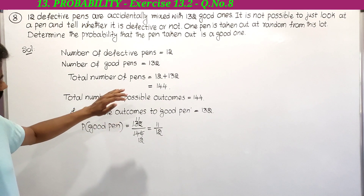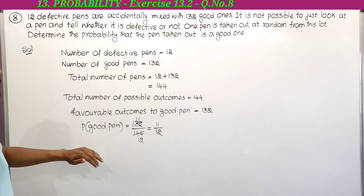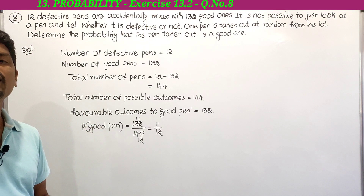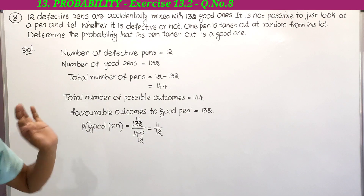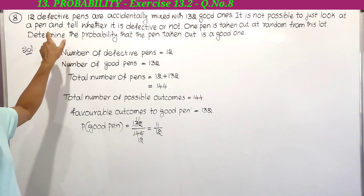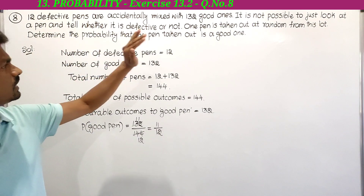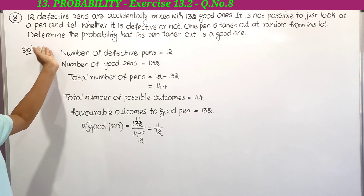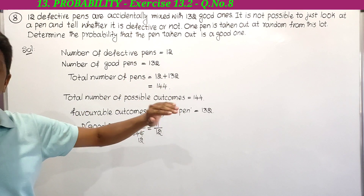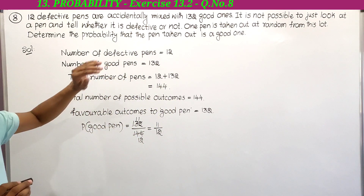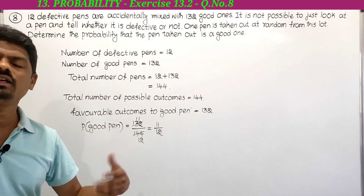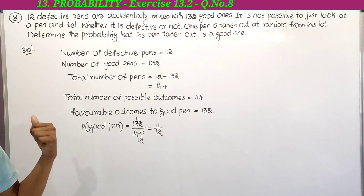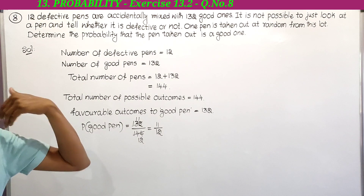So the probability of a good pen is 11 by 12. Note that the probability of 'not a defective pen' is also 11 by 12 — both are the same. Not defective pen and good pen are equivalent. This is the 8th problem in exercise 13.2.